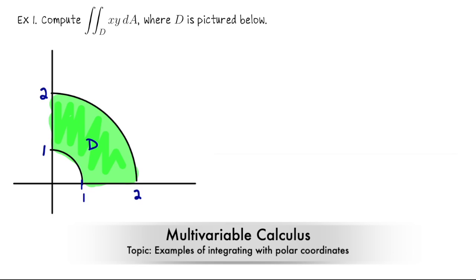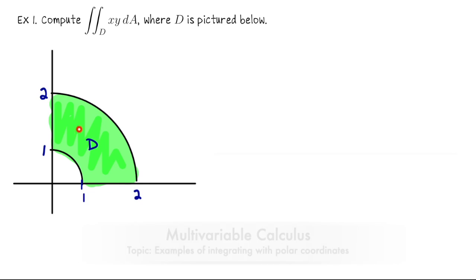In this lecture we're going to do three examples of double integration using polar coordinates. So for our first example, let's integrate f(x,y) = xy over this domain D pictured in the first quadrant.